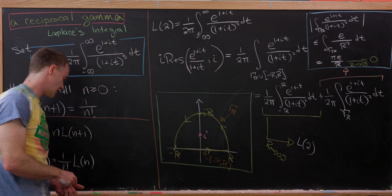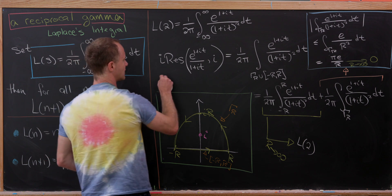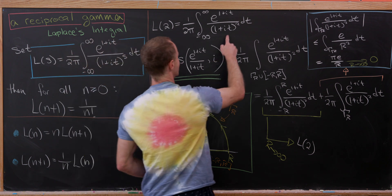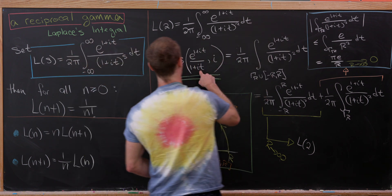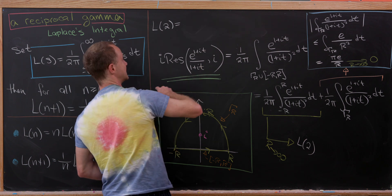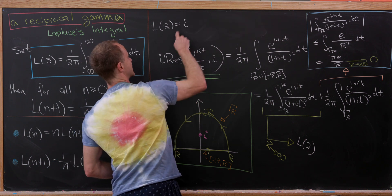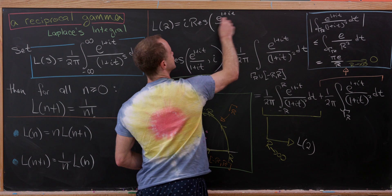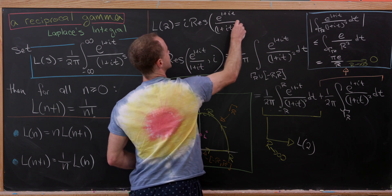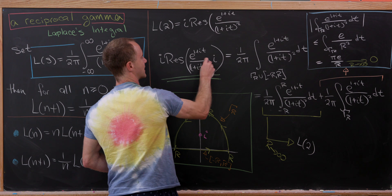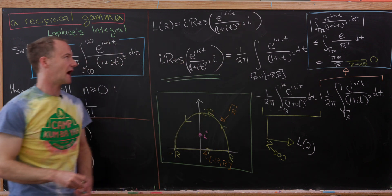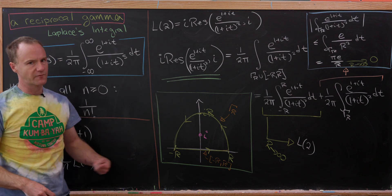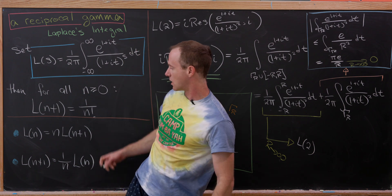As r goes to infinity, the semicircle contribution vanishes, so the whole contour integral becomes L(2). But the left-hand side equals i times the residue of e to the (1+it) over (1+it)^2 at t = i. So L(2) equals i times that residue, and we just need to compute it.